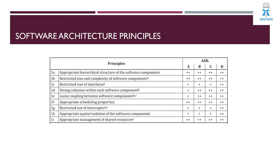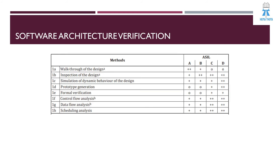Principle 1i is about appropriate management of shared resources. Shared resources can be hardware resources, software resources, or a combination of both. We need a safety mechanism or process measure in place to prevent conflicting access to shared resources. For example, if two software components are accessing the same database at the same time, we need to prioritize one over the other. This is highly recommended for ASIL A, B, C, and D levels.